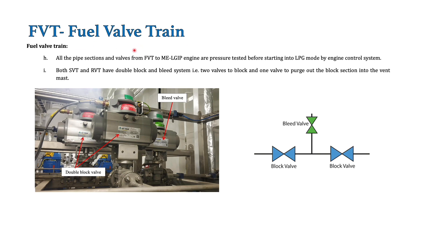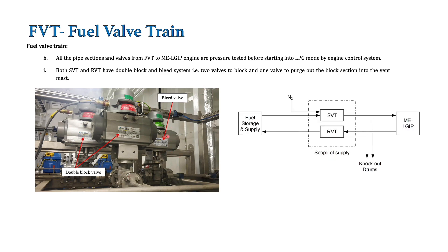Another important feature of the fuel wall train is the double block and bleed system. In this system there are two valves in series, and the section between them is vented to the vent mast through a bleed valve. As you can see from the diagram, these two are the double block valves and this one is the bleed valve. The double block and bleed system is used on both the supply wall train and the return wall train. In the supply wall train it isolates the supply system, and the nitrogen connection to the supply wall train is also made through this double block and bleed system.